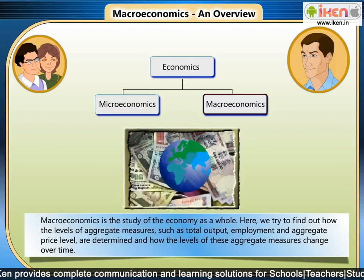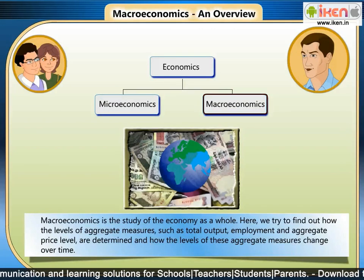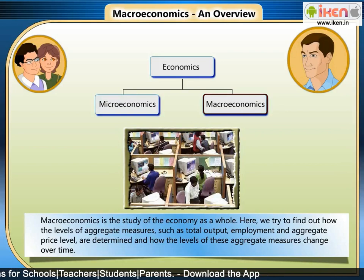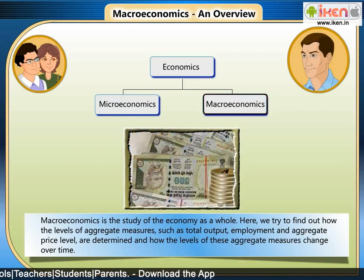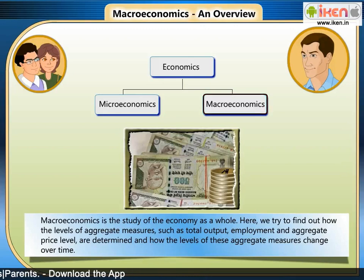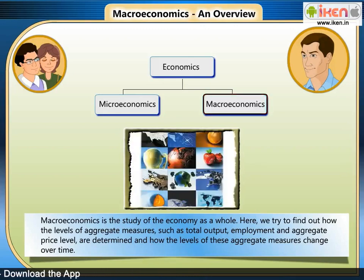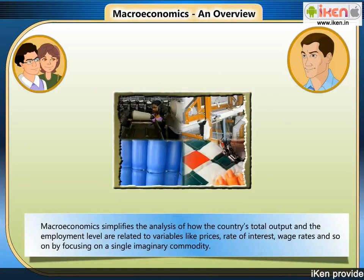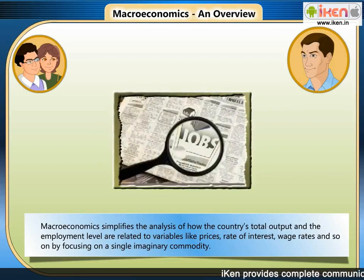In macroeconomics, we try to find out how the levels of aggregate measures such as total output, employment, and aggregate price level are determined, and how the levels of these aggregate measures change over time. We simplify the analysis of how the country's total output and the employment level are related to variables like prices, rate of interest, wage rates, and so on.